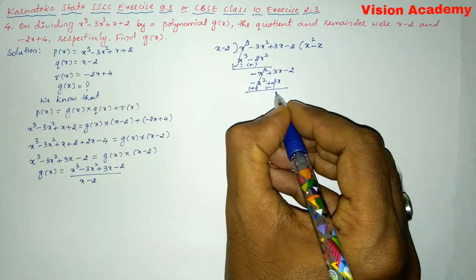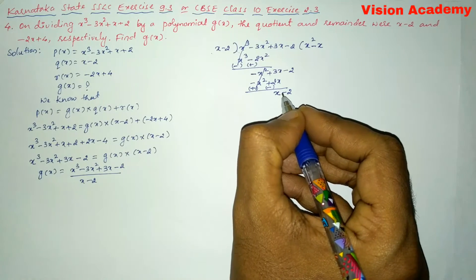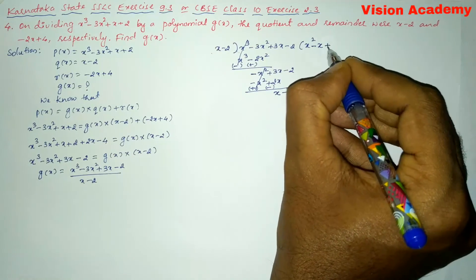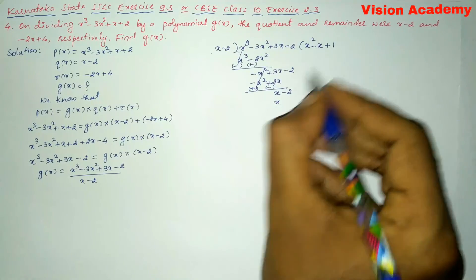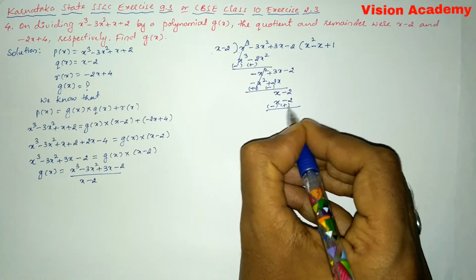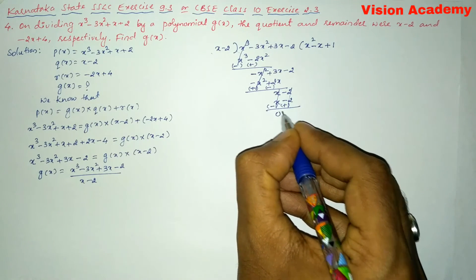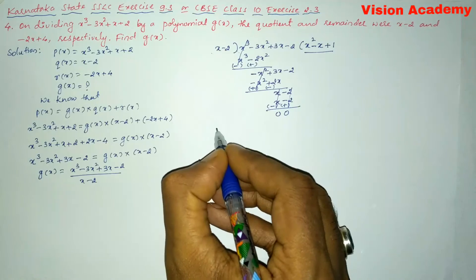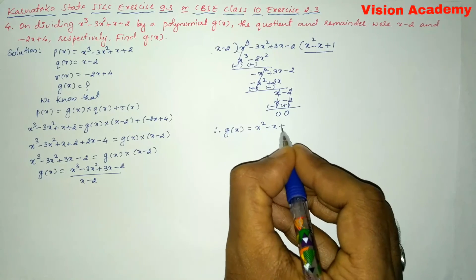After subtraction, 3x minus 2x gives us x, and minus 2 remains. Now we have x in the dividend and x in the divisor, so we multiply by 1. One times x minus 2 gives x minus 2. Subtract — change signs — plus x and minus x cancel, and plus 2 minus 2 also cancels. The remainder is 0. The quotient obtained is x² minus x plus 1. Therefore, g(x) is equal to x² minus x plus 1.